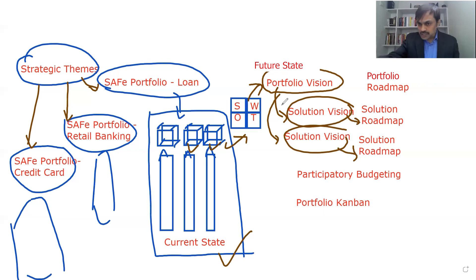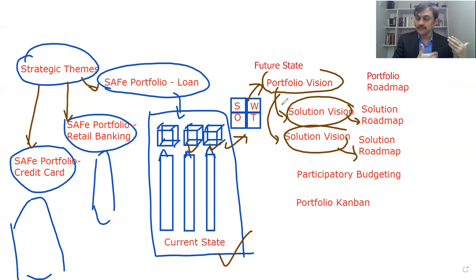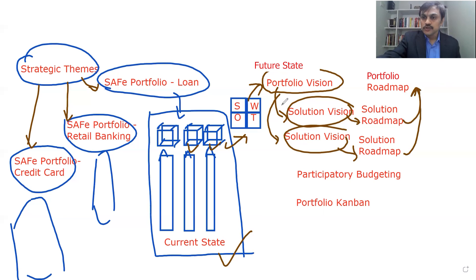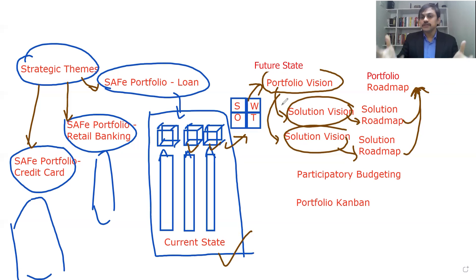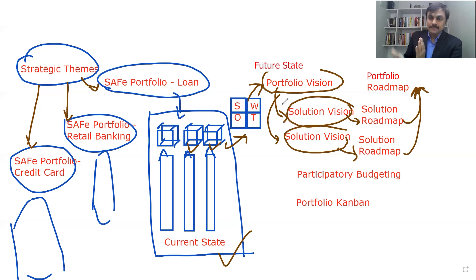At the solution level, the Lean Portfolio working with solution and Agile Release Train level stakeholders needs to adjust the Solution Vision as per the Strategic Theme. That Solution Vision adjustment leads to adjustment in the Solution Roadmap. Once we have this understanding and an updated Solution Roadmap, it will update the Portfolio Roadmap. The Portfolio Roadmap can be considered as the overall portfolio direction — the approach towards achieving the Portfolio Vision — showing how the Portfolio Vision will get realized over a period of time.